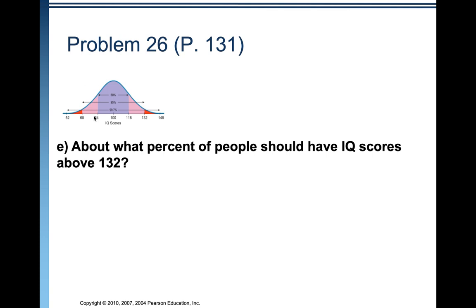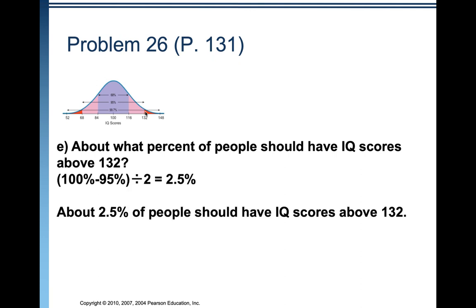About what percent of people should have IQ scores above 132? This is actually easier. 132 is the upper bound of the 95% range from the center, so 2.5% would be above that — since half of that 5% is in the upper tail and half in the lower tail. So about 2.5% of people should have IQ scores above 132.